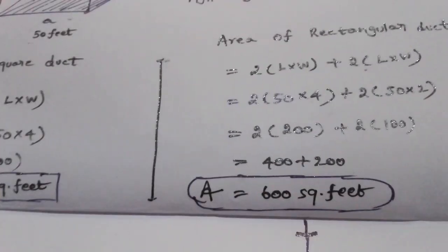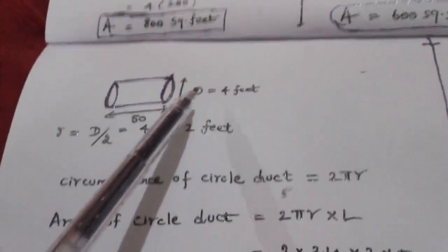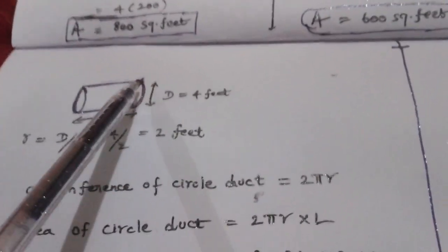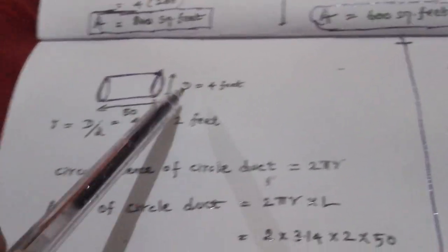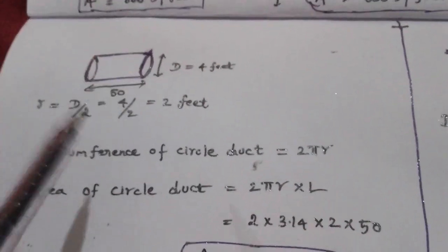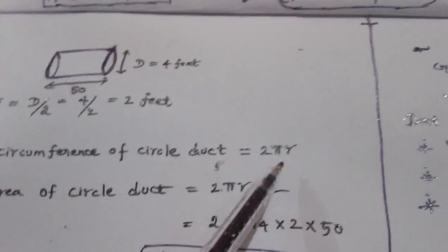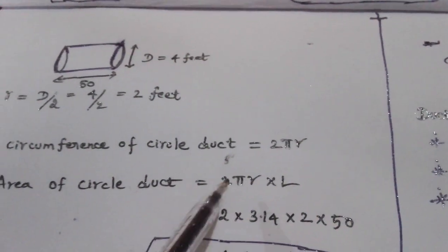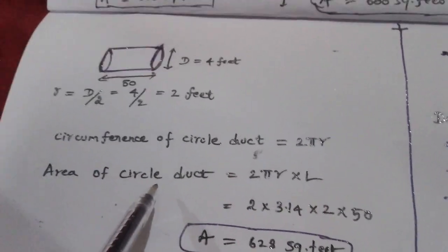This is the circular duct. For a circular duct you need the diameter and the length. The radius is half the diameter. The circumference of the circular duct is 2 pi r. So the area of the circular duct is 2 pi r into L.